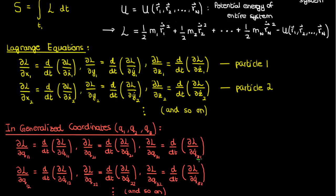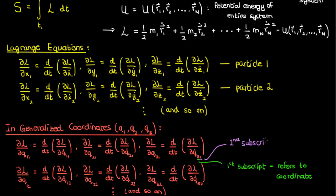Note here that the first subscript on the q denotes the coordinate that we're referring to — so q1, q2, q3 — while the second subscript denotes which particle we're referring to.